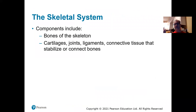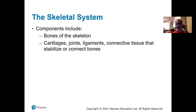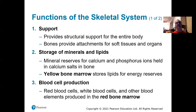The skeletal system is comprised of more than just bones. It includes cartilage, ligaments, and other connective tissues that stabilize or connect the bones together. Functions of the skeletal system include support — structural support for the entire body — and it's also a huge site of mineral storage. Things like calcium and phosphorus are stored in high levels in our bones. At the center of bones is yellow bone marrow, which stores lipids for energy reserves.